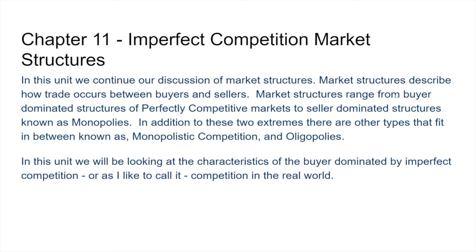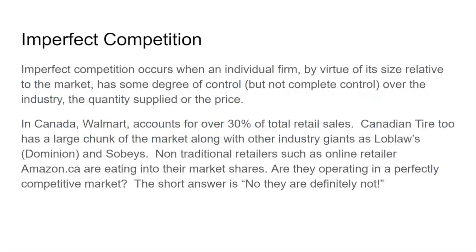We're looking at the characteristics of what I like to call competition in the real world. Most markets are somewhere in this imperfect competition spectrum. It occurs when an individual firm, by virtue of its size relative to the market, has only some degree of control — not a lot. In a monopoly, the seller has absolute control. In a competitive market, the firm had no control whatsoever. In imperfect competition, the firm has some degree of control but not complete control over the industry, quantity supplied, and price.